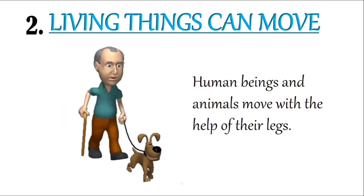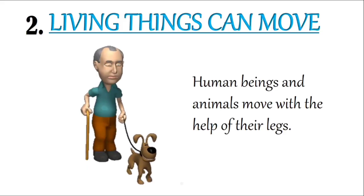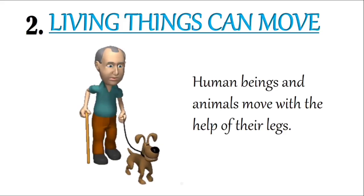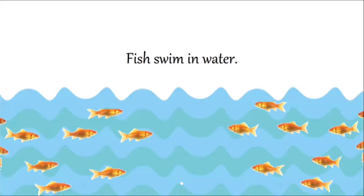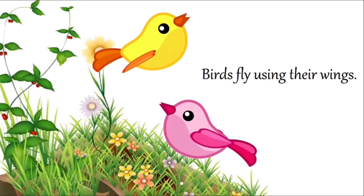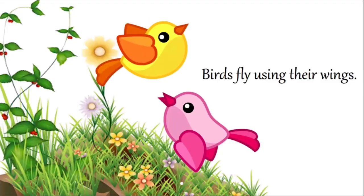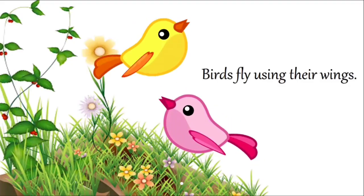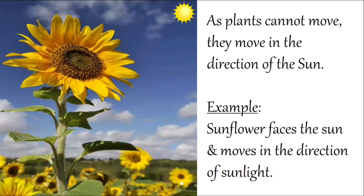Living things can move. Human beings and animals move with the help of their legs. Whereas fish swim in water to move, and birds fly using their wings. As plants cannot move freely, they move in the direction of the sun. For example, the sunflower faces the sun and moves in the direction of the sunlight.